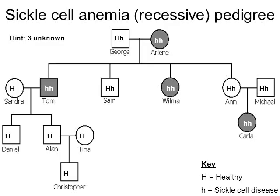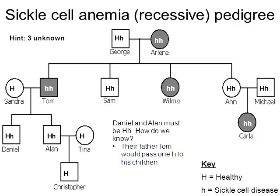Daniel and Alan must also be heterozygous, capital H, lowercase h. The clue is their father Tom — Tom has two lowercase h's, so he passes a lowercase h to any of his children. He has two children, Daniel and Alan, so Tom gives a lowercase h to both of them.